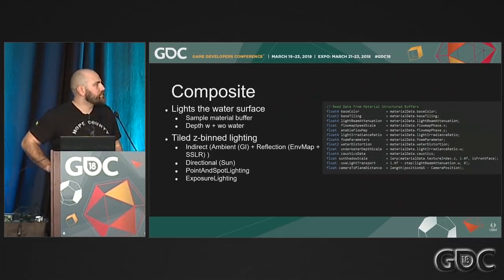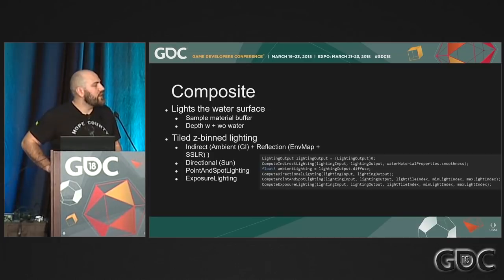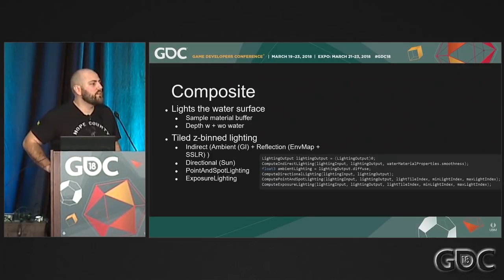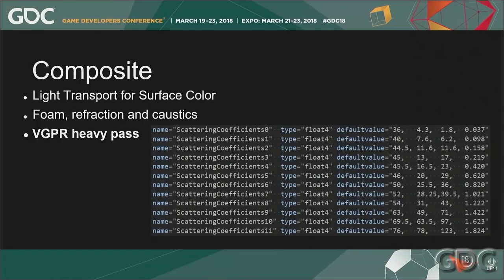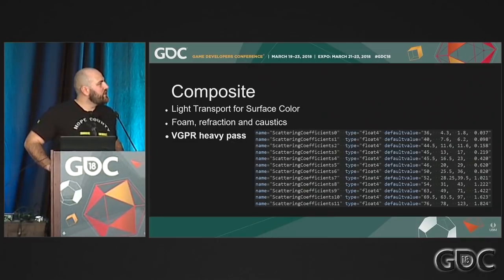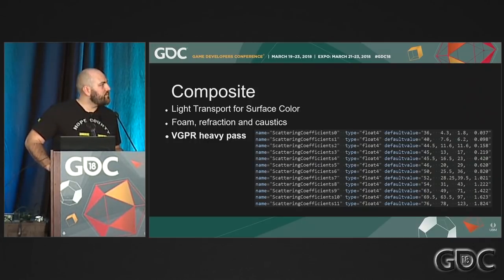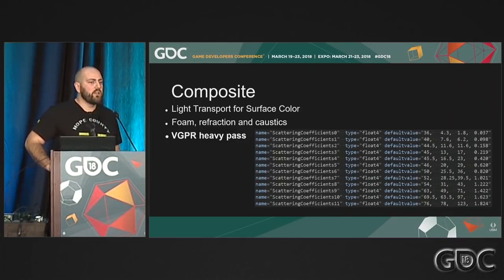Once we've blended all our data, we read from the structure buffer and compute the lighting. Previously, water only supported the directional light. Now we do full tile z-bin lighting on the water surface, which is the most expensive part of the lighting path. We now support GI reflections, directional point spotlights, and exposure lights. For light transport, artists deal with scattering coefficients rather than specific colors — a table of water types with RGB scattering coefficients and a turbidity value based on physical properties of water, allowing creation of oceans, muddy rivers, or clear rivers.